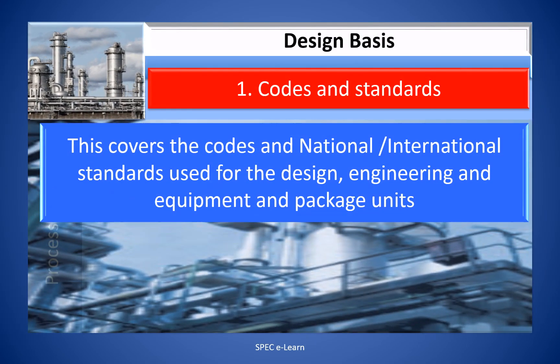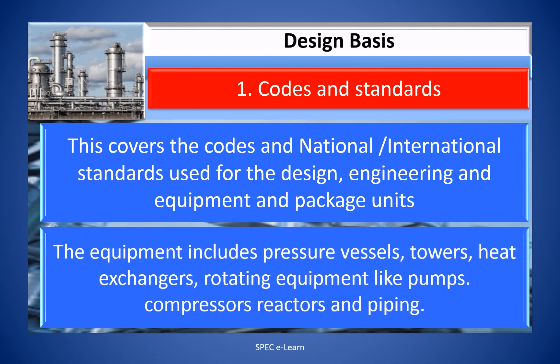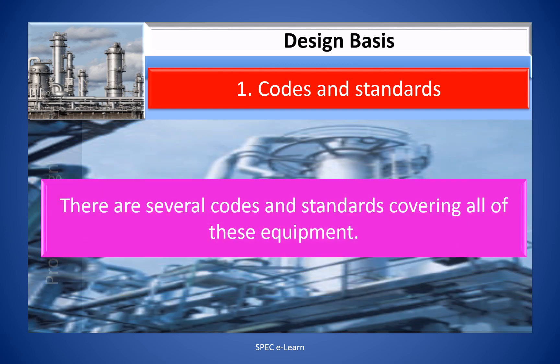One: Codes and Standards. This covers the codes and national and international standards used for the design, engineering, equipment, and package units. Equipment includes pressure vessels, towers, heat exchangers, rotating equipment like pumps and compressors, reactors, and piping. There are several codes and standards covering all of this.